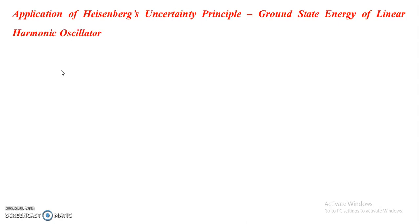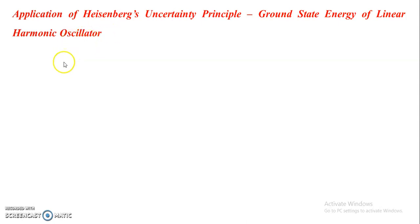We all know what Heisenberg's uncertainty principle states: we cannot simultaneously specify the position and momentum of a microscopic particle with ultimate accuracy. Also, this principle applies to conjugate variables like energy and time, angular momentum and angle.